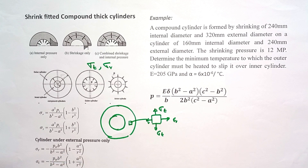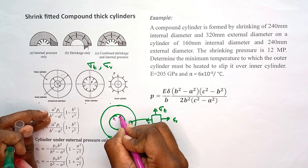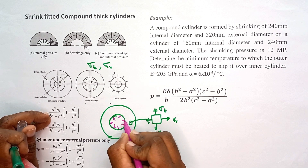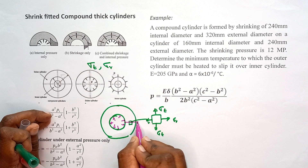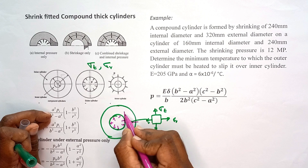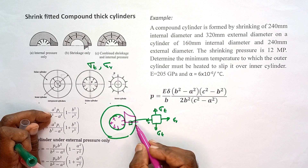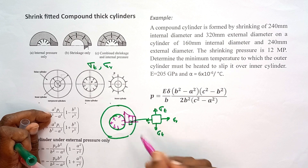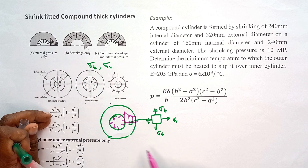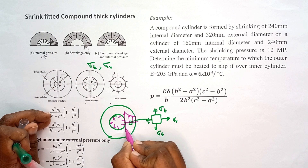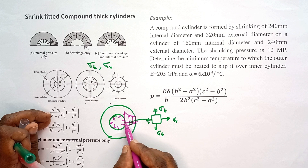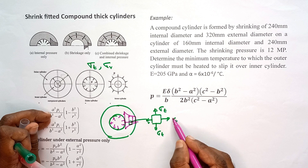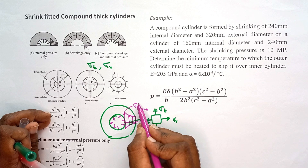When the cylinder is subject to internal pressure only, Sigma T maximizes at the inner surface. This is how Sigma T is varying across the cylinder wall. The radial stress is negative, always acting inward when the cylinder is subject to internal pressure only. The magnitude of Sigma T is greater than the magnitude of Sigma R.